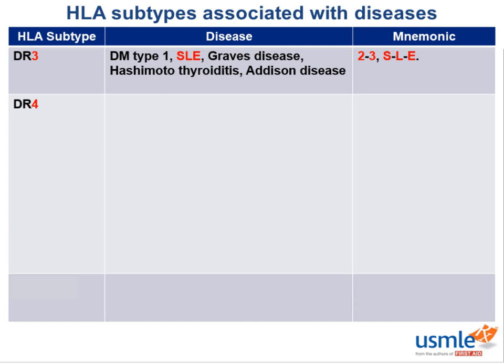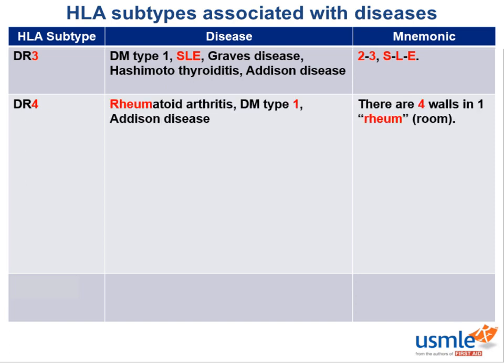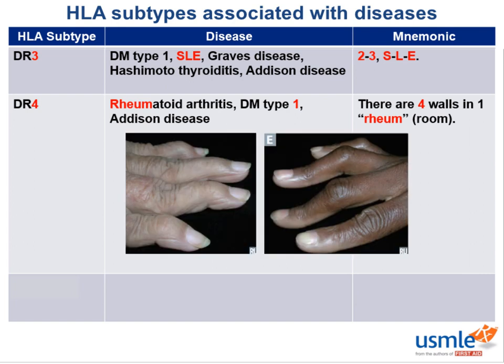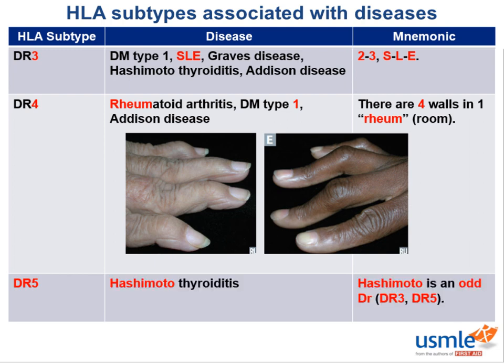HLA-DR4 is associated with rheumatoid arthritis, diabetes mellitus type 1, and Addison disease. A good way to remember DR4 is that there are four walls in a room. Classic deformities in rheumatoid arthritis are the swan neck and boutonniere deformities. HLA-DR5 is associated with Hashimoto thyroiditis. Since Hashimoto is an odd doctor, the odd DR numbers — 3 and 5 — are both associated with Hashimoto.